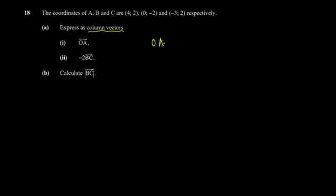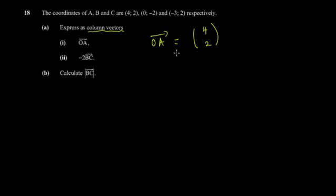OA simply means the vector for that point. Since we say these are actual coordinates, you just take the coordinate and express it as a two-by-one column matrix.